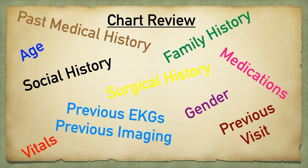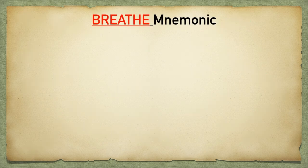If the patient is stable and time allows, you can perform a chart review. This includes looking at their age and gender, reviewing vital signs, medication list, and past medical, surgical, family, and social history. See if they've been seen before for shortness of breath and what was done at that time. Review any previous EKGs, cardiac catheterizations, or previous imaging such as chest X-ray, CT chest, or echocardiogram. A chart review is a great way to better understand the patient, but don't let it form premature bias or closure — go in open-minded.